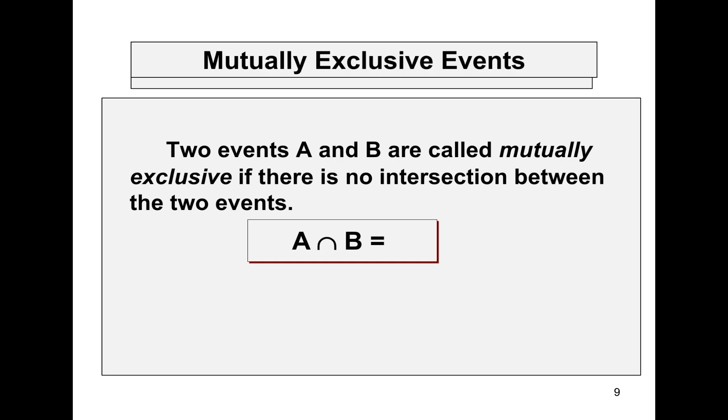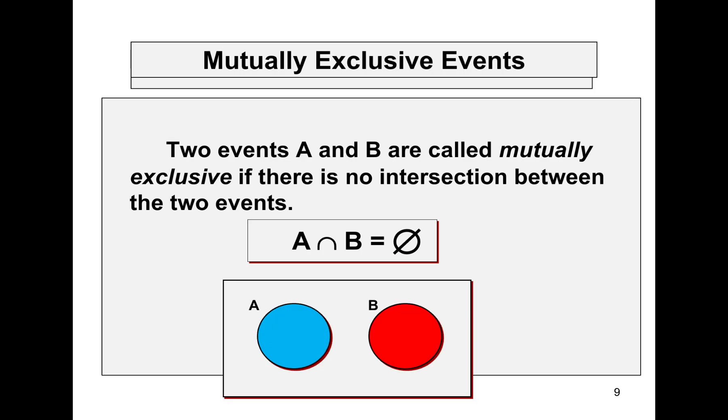Mutually exclusive events. Two events, A and B, are called mutually exclusive if there is no intersection between the two events. In mathematical sentence, we may say that A intersect B is equal to null set. Or, we may represent this idea in Venn diagram. A and B is totally separated from each other.